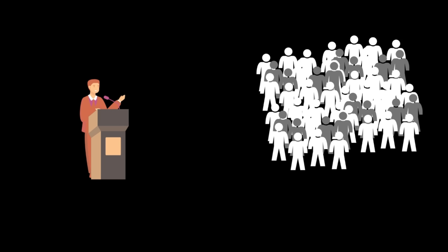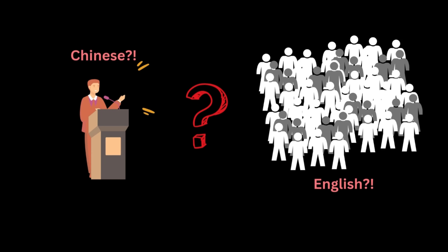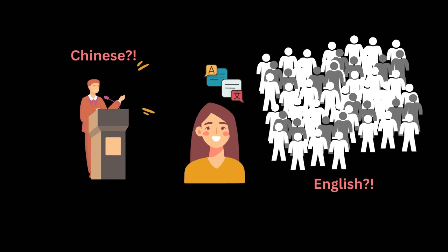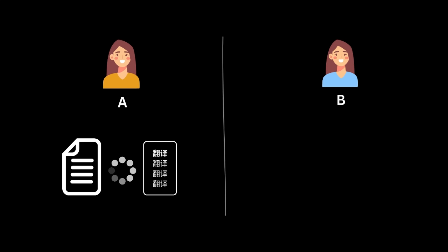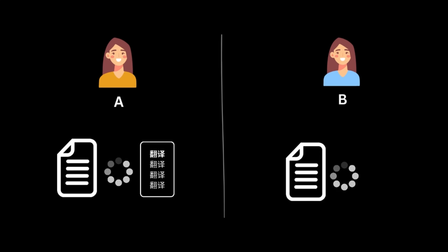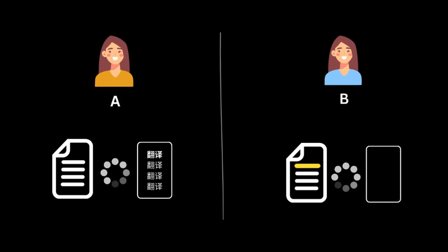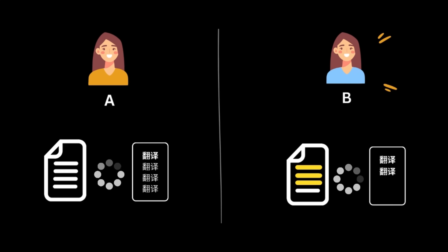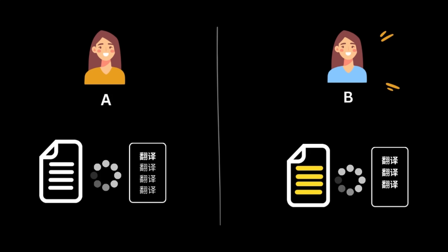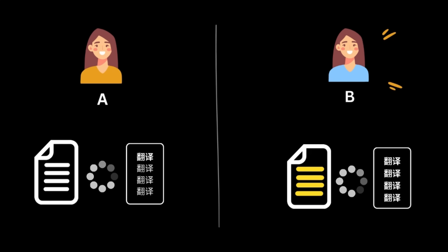We can take an analogy to understand this easily. Say you have to deliver a speech to a Chinese audience, assuming you don't know Chinese and they don't understand English. You hire a translator. Translator A says: give me your whole English speech, I'll convert it to Chinese, optimize it, then deliver it. But Translator B works on the fly — as you deliver each English line, B translates it into Chinese and delivers it to the audience immediately.